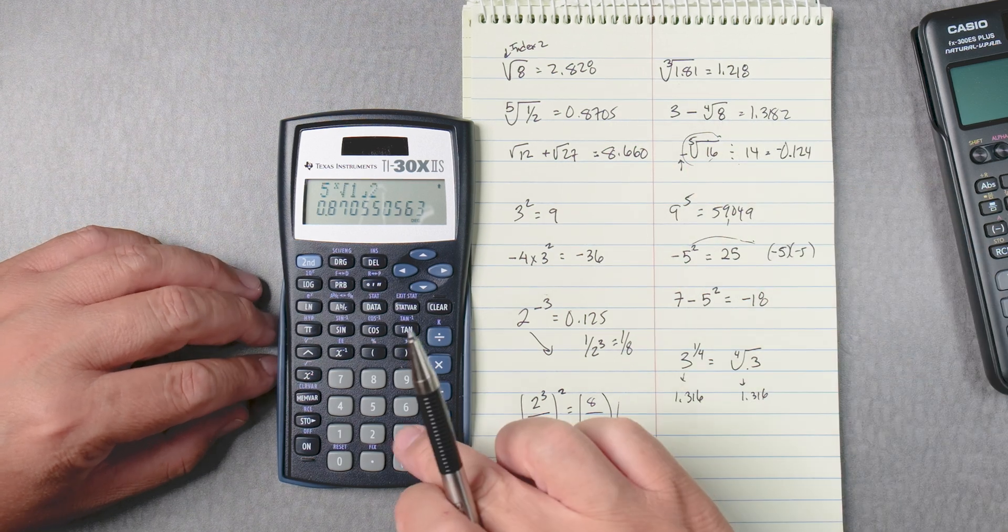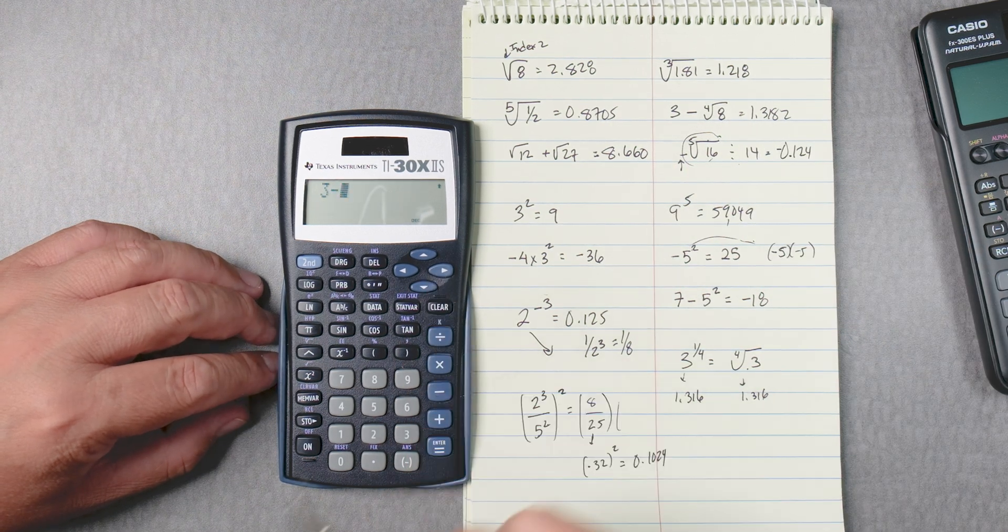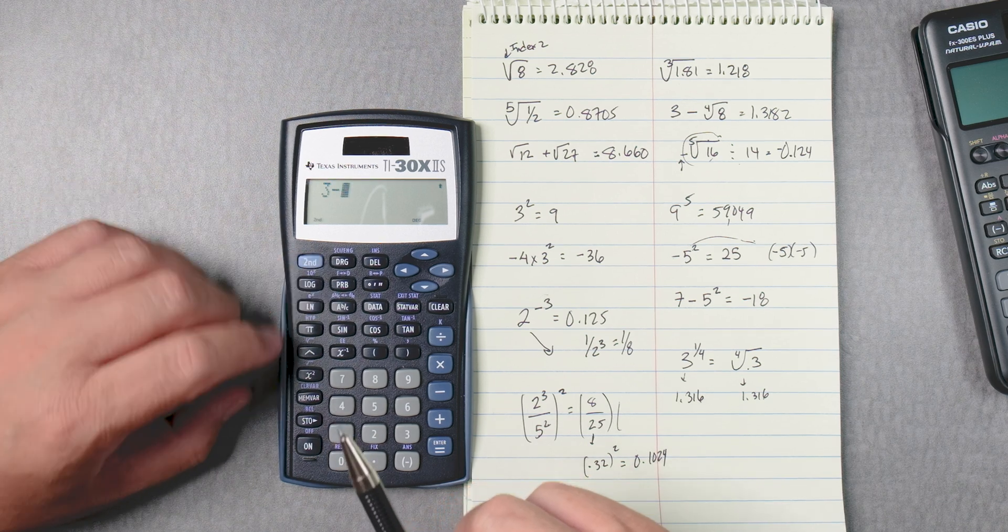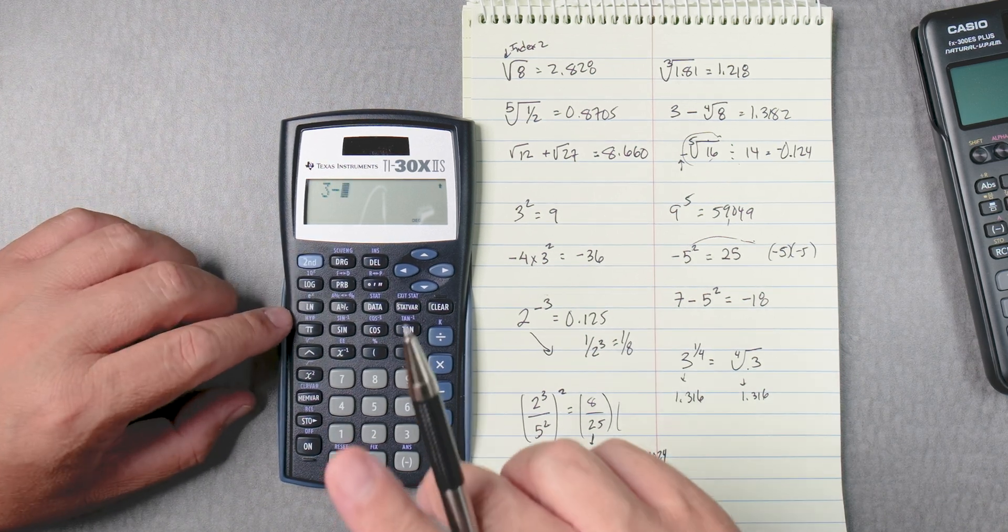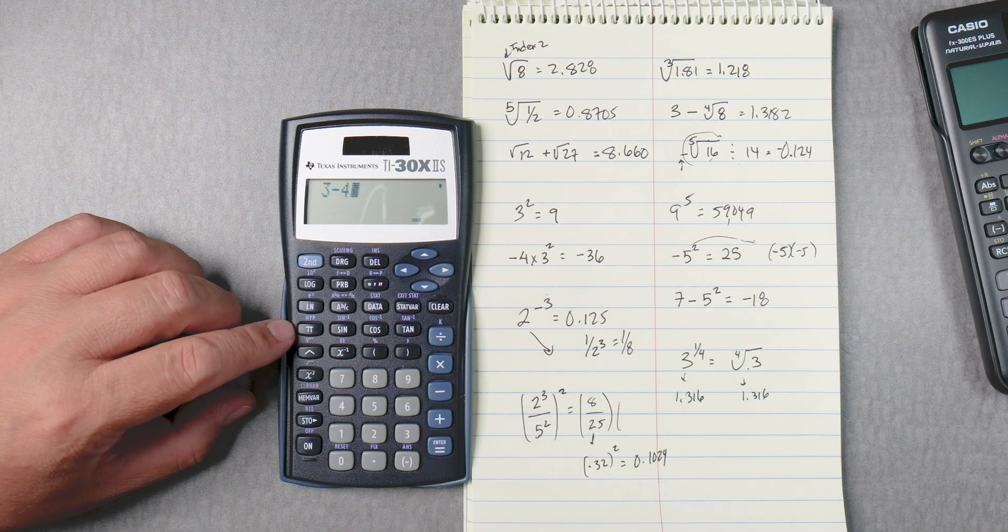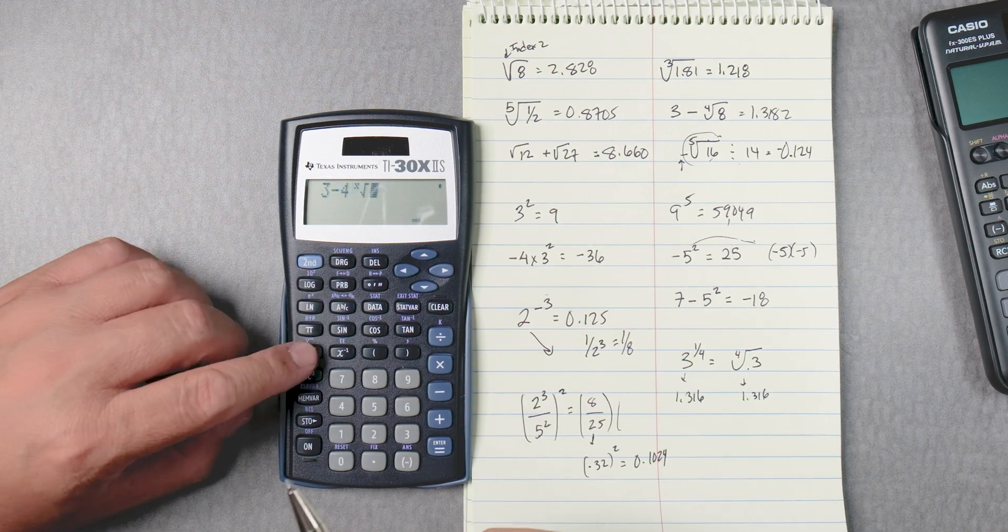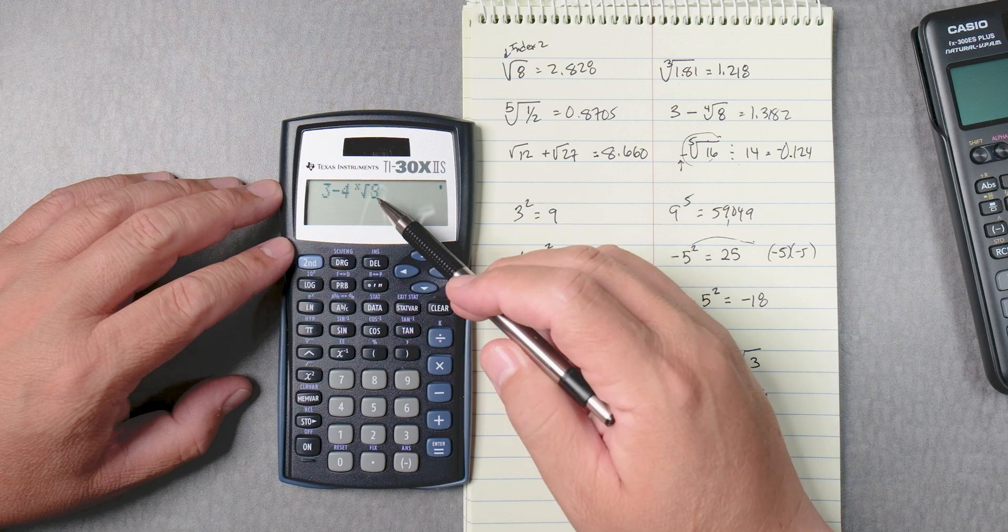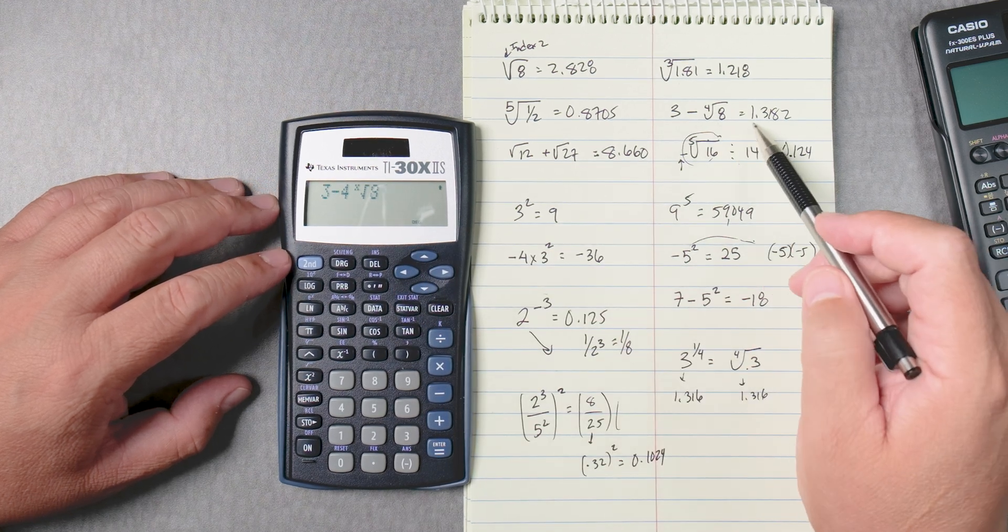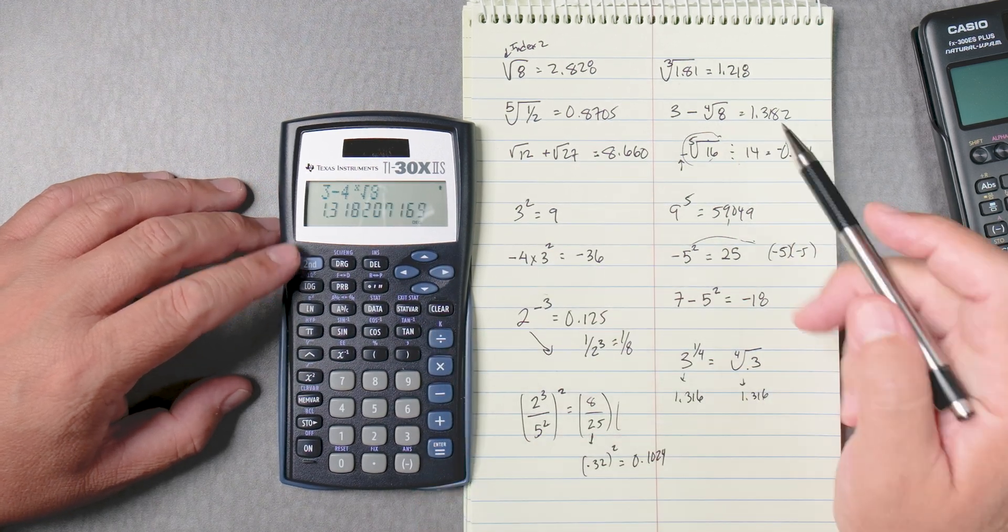Okay, let's do this one. This one is 3, take away, right? The fourth root. We need the fourth root of 8. See that? 3, take away the fourth root of 8. It's not written very nicely, but it works, okay?